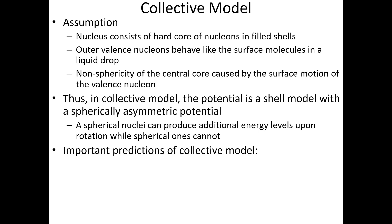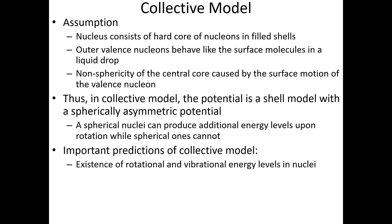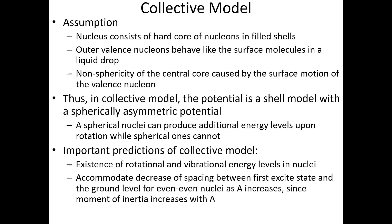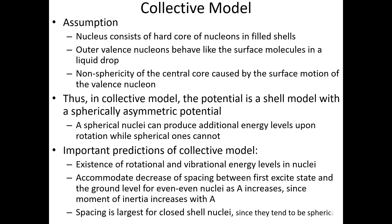The main findings of the collective model are: this model talks about the existence of rotational and vibrational energy levels in the nuclei. In addition, it accommodates the decrease of spacing between the first excited state and the ground level for even-even nuclei as atomic mass increases, since the moment of inertia increases with atomic mass.